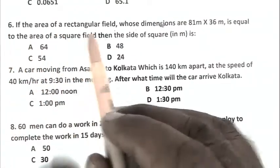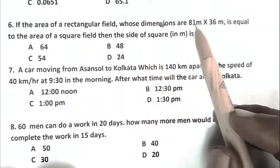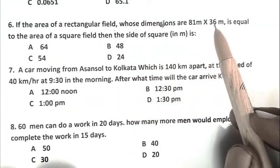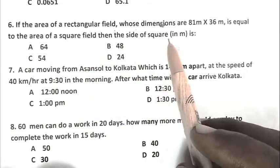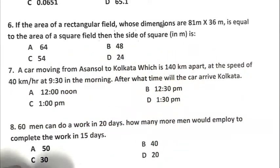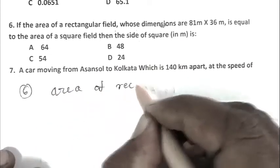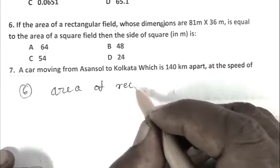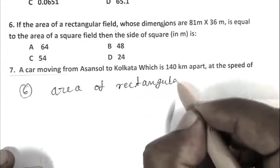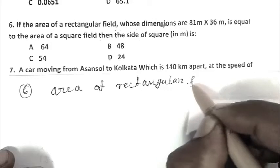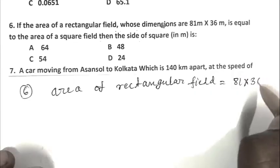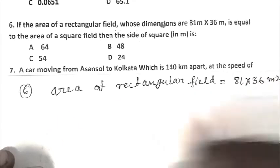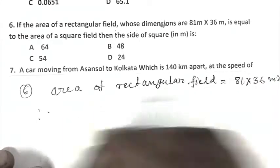Question number 6: If the area of a rectangular field whose dimensions are 81 meter by 36 meter is equal to the area of a square field, then the side of square in meters is.